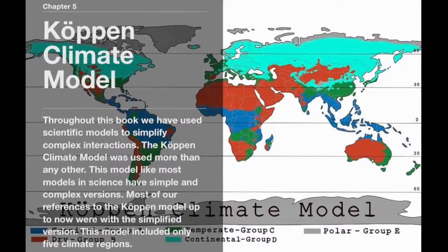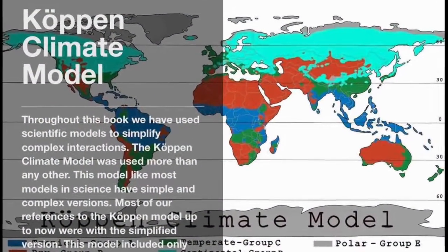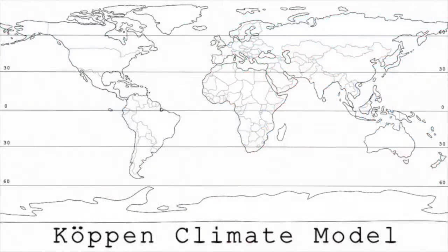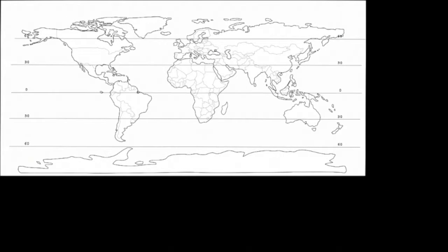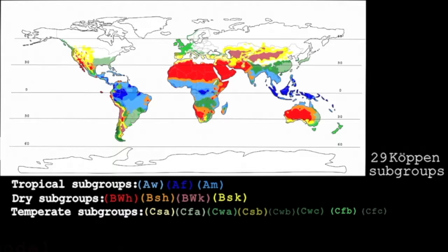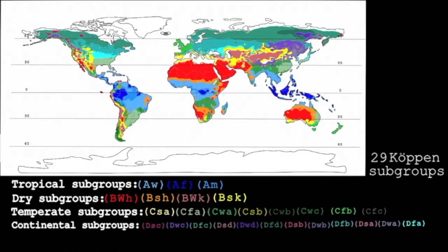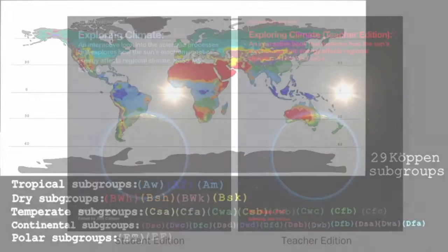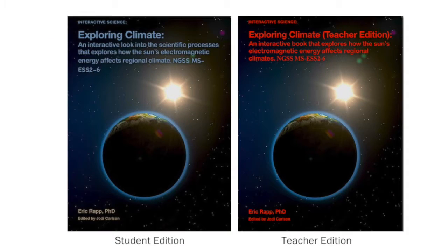Finally, in chapter five, we wrap everything up with one video that summarizes the content of the book, and it explores the microclimates or smaller climate regions found within the COP and climate model. Altogether, this book is very thorough and covers the Next Generation Science Standards for climate. You can get a free sample book in the Apple iBook store by following the links available in this video.